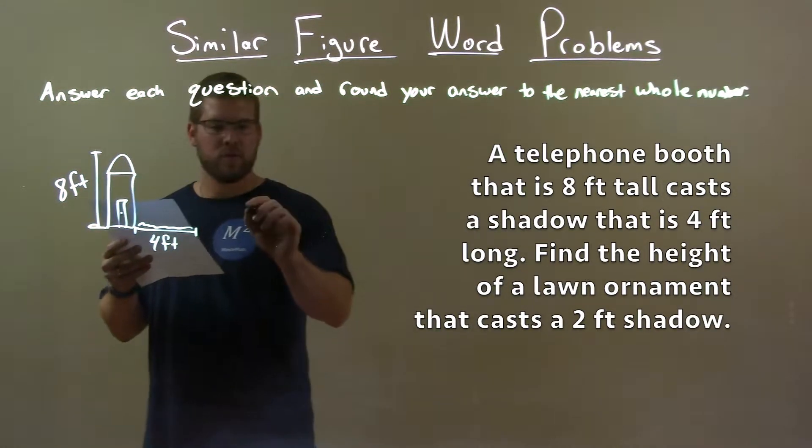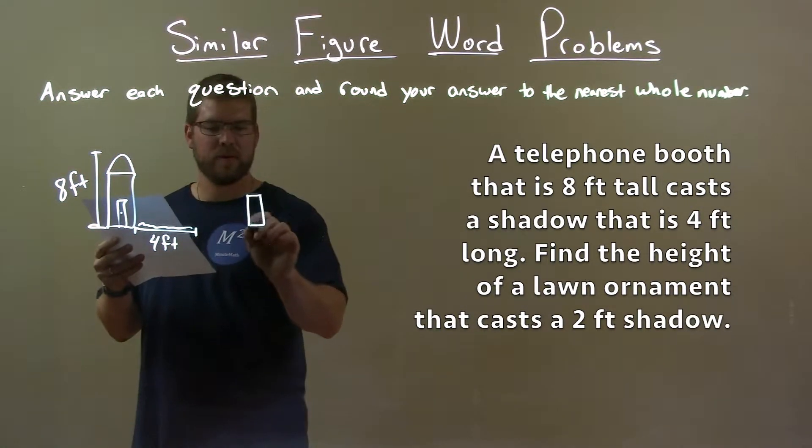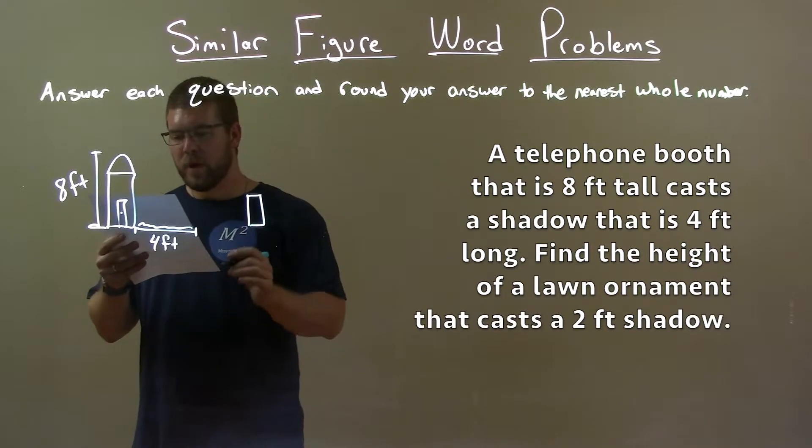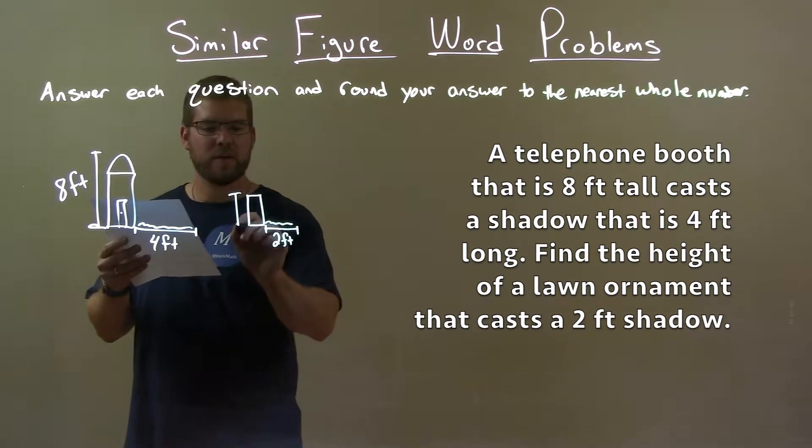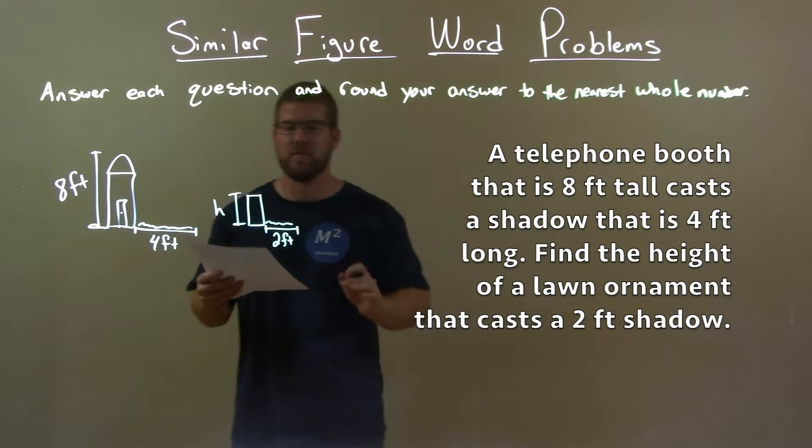Now they say we have a little lawn ornament. Make a little rectangle. I don't know what it looks like, what type it is. But they said this lawn ornament casts a 2 foot shadow. We need to find the height of this lawn ornament.